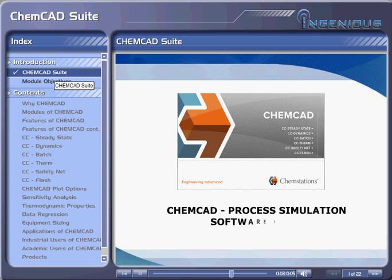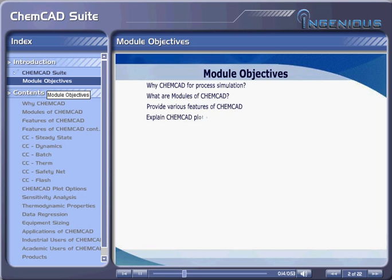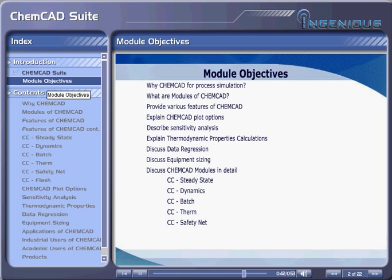ChemCAD Process Simulation Software Suite. This module covers: why ChemCAD for process simulation, what the modules of ChemCAD are, various features of ChemCAD, ChemCAD plot options, sensitivity analysis, thermodynamic properties calculations, data regression, equipment sizing, ChemCAD modules in detail including CC Steady State, CC Dynamics, CC Batch, CC Therm, CC Safety Net, CC Flash, and applications of ChemCAD along with a list of ChemCAD users in India and Asia Pacific.